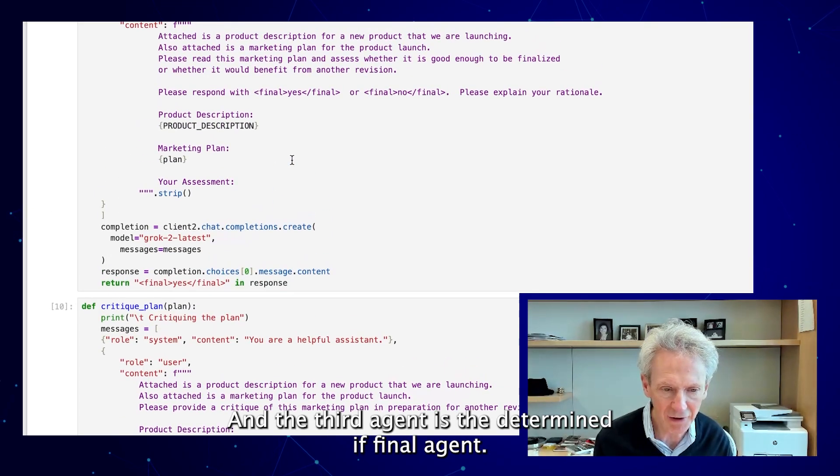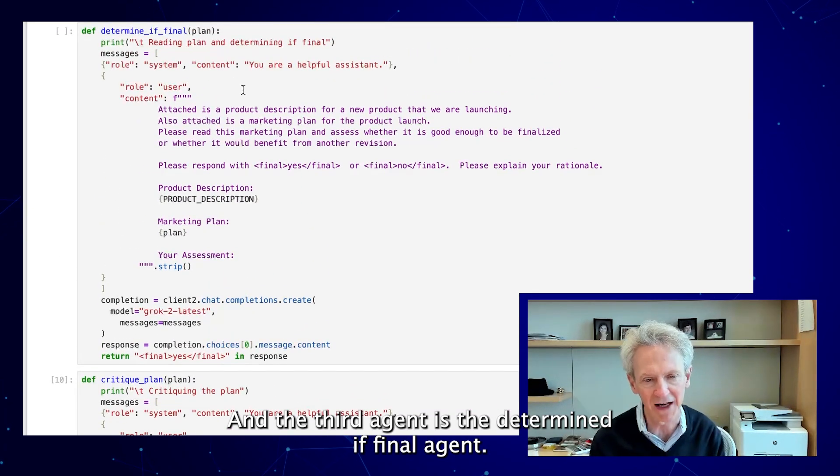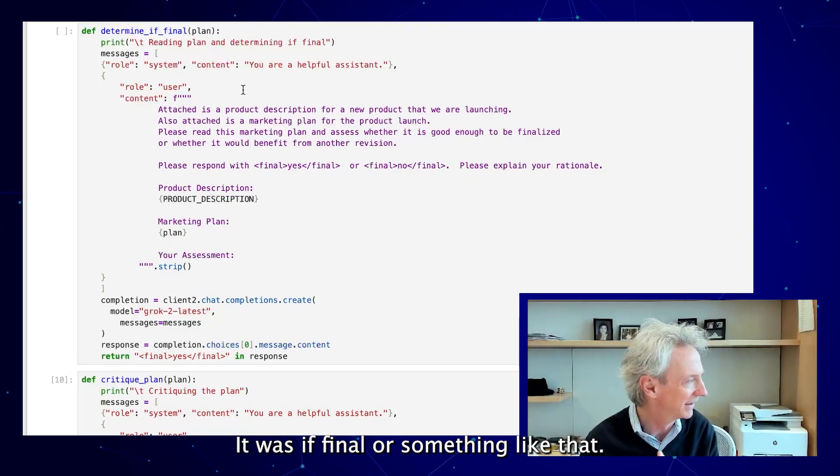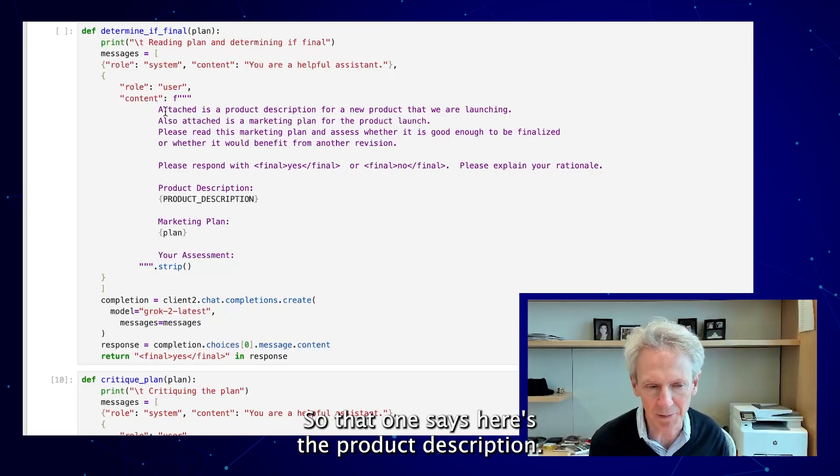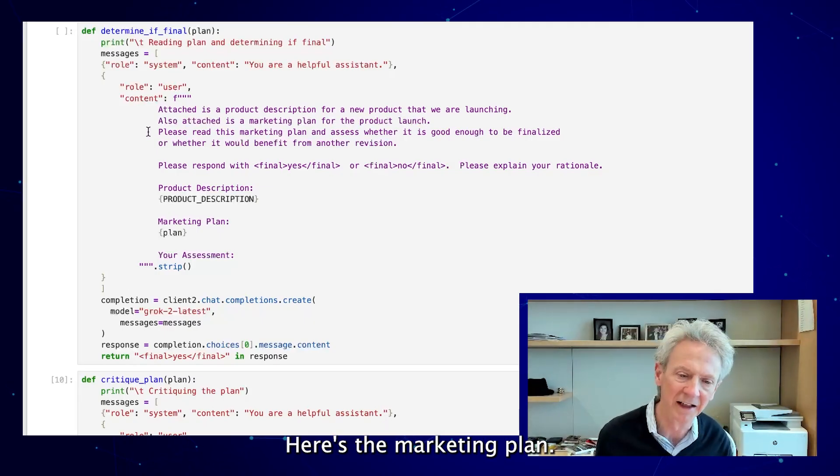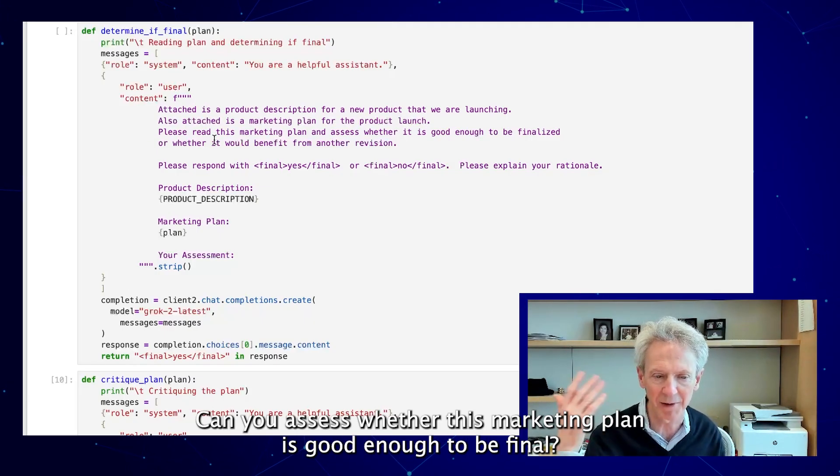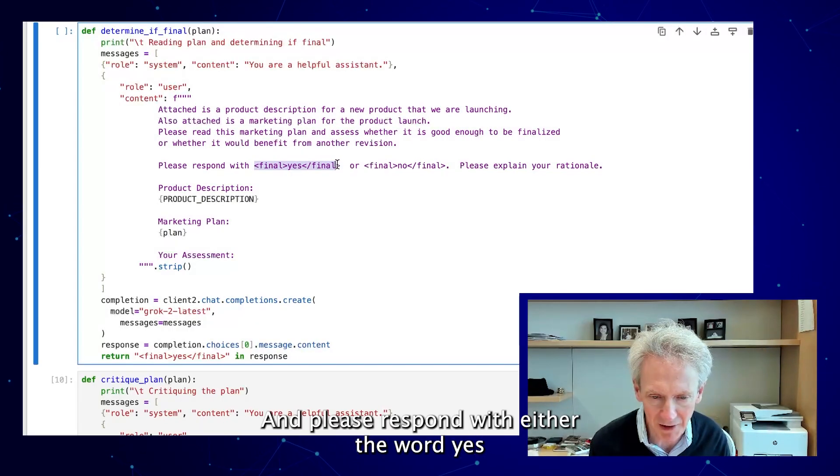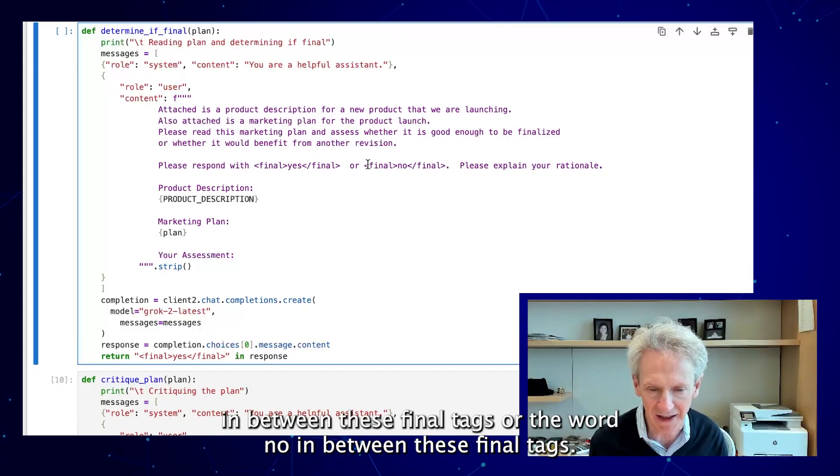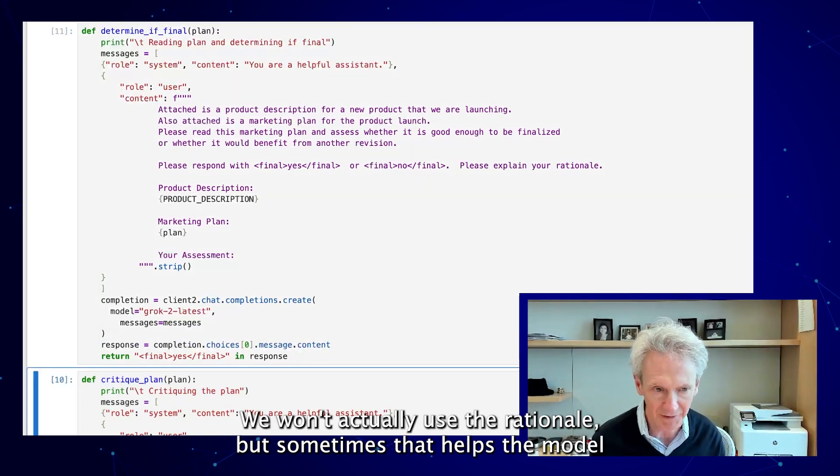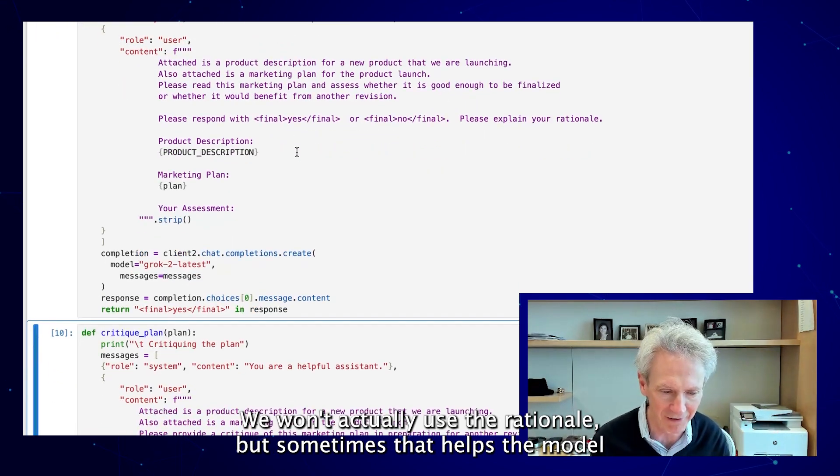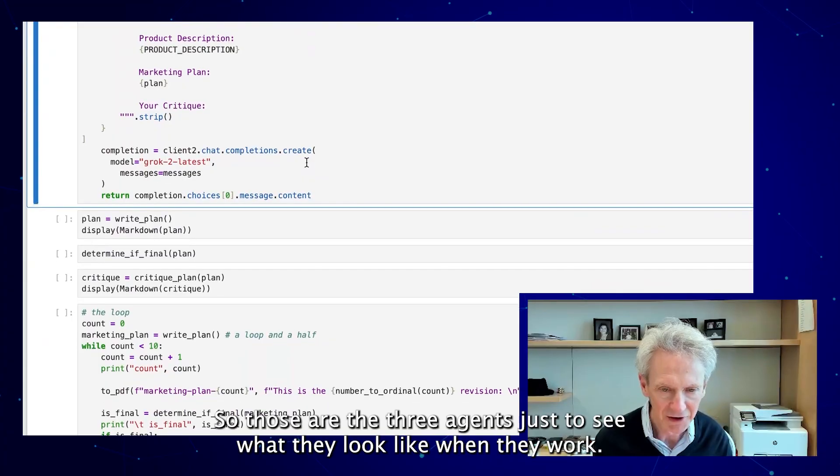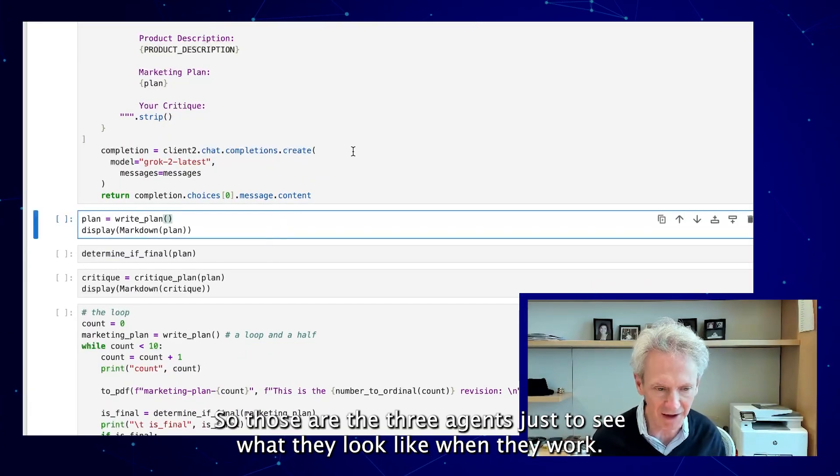And the third agent is the determine if final agent. That one says, here's the product description, here's the marketing plan. Can you assess whether this marketing plan is good enough to be final? And please respond with either the word yes in between these final tags or the word no in between these final tags. And please explain your rationale. We won't actually use the rationale, but sometimes that helps the model do a better job. So those are the three agents.